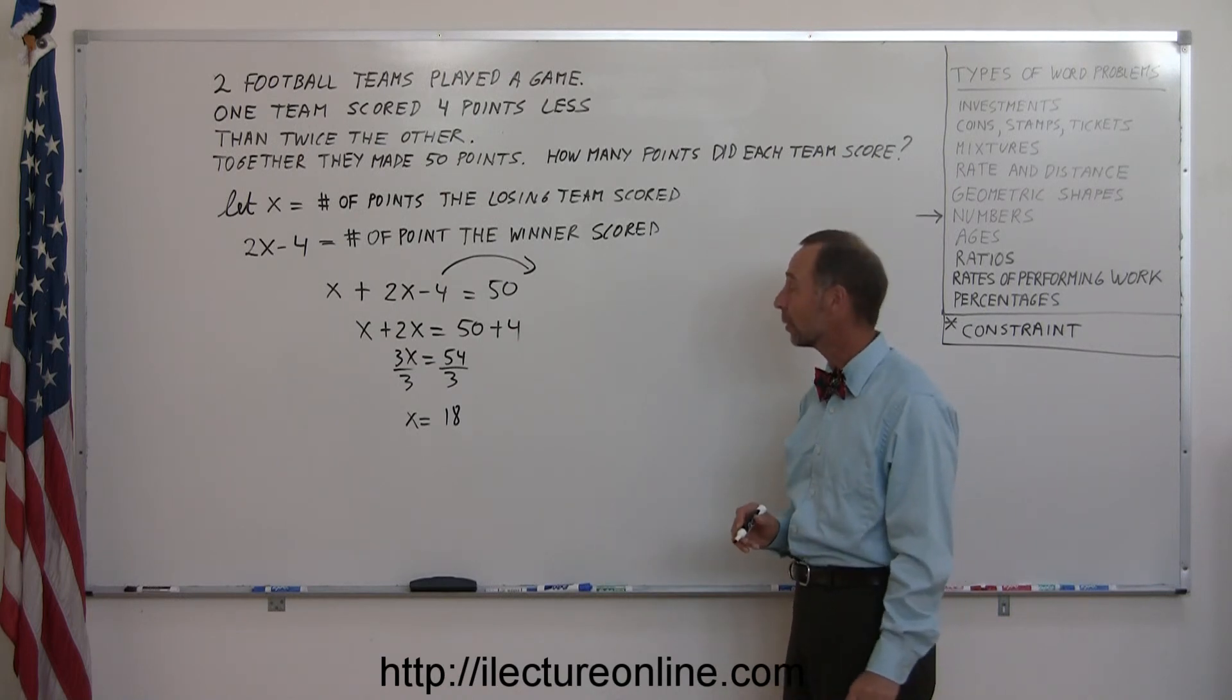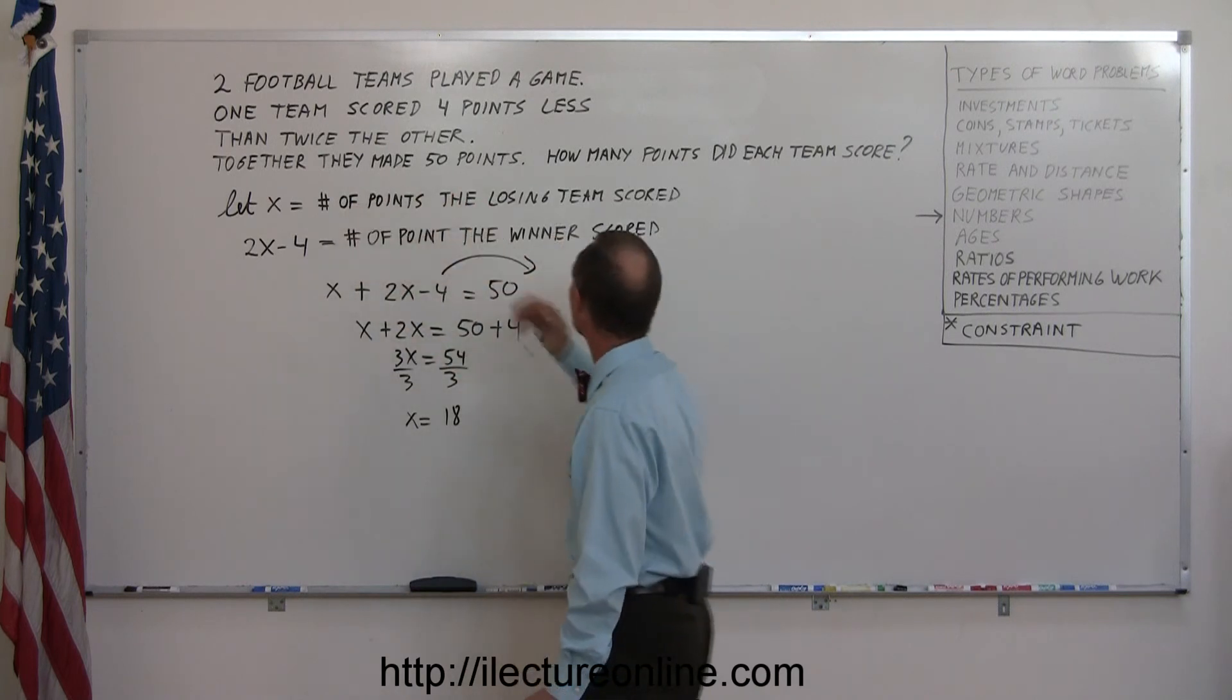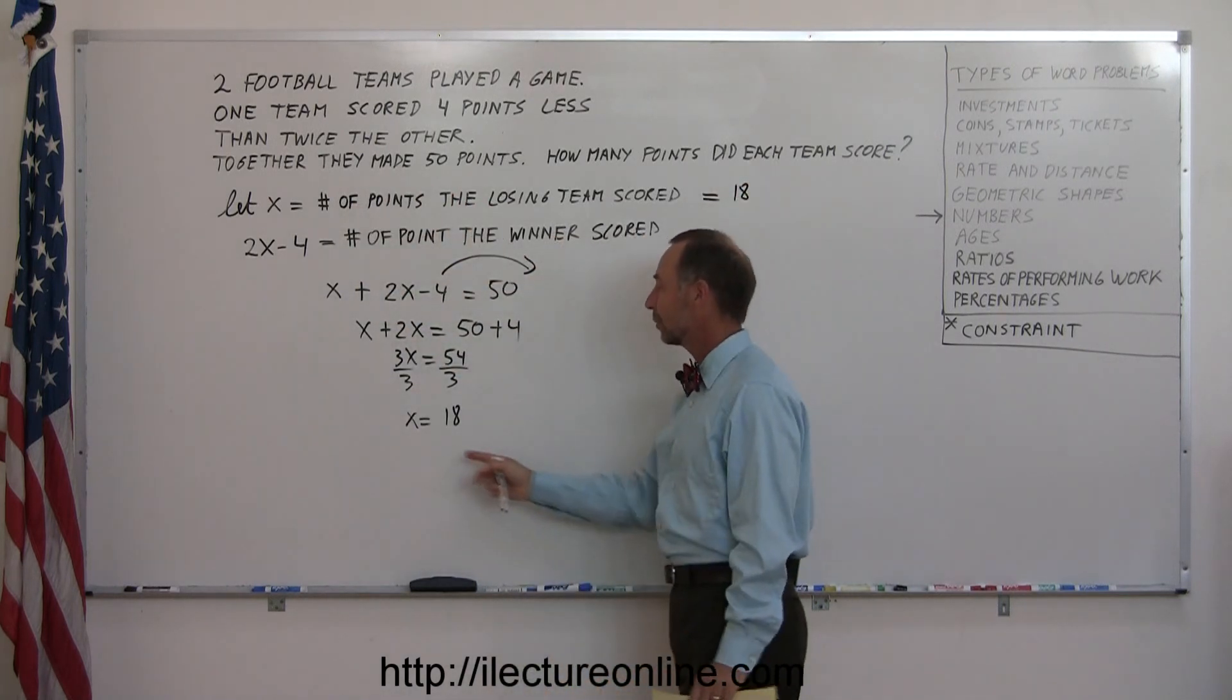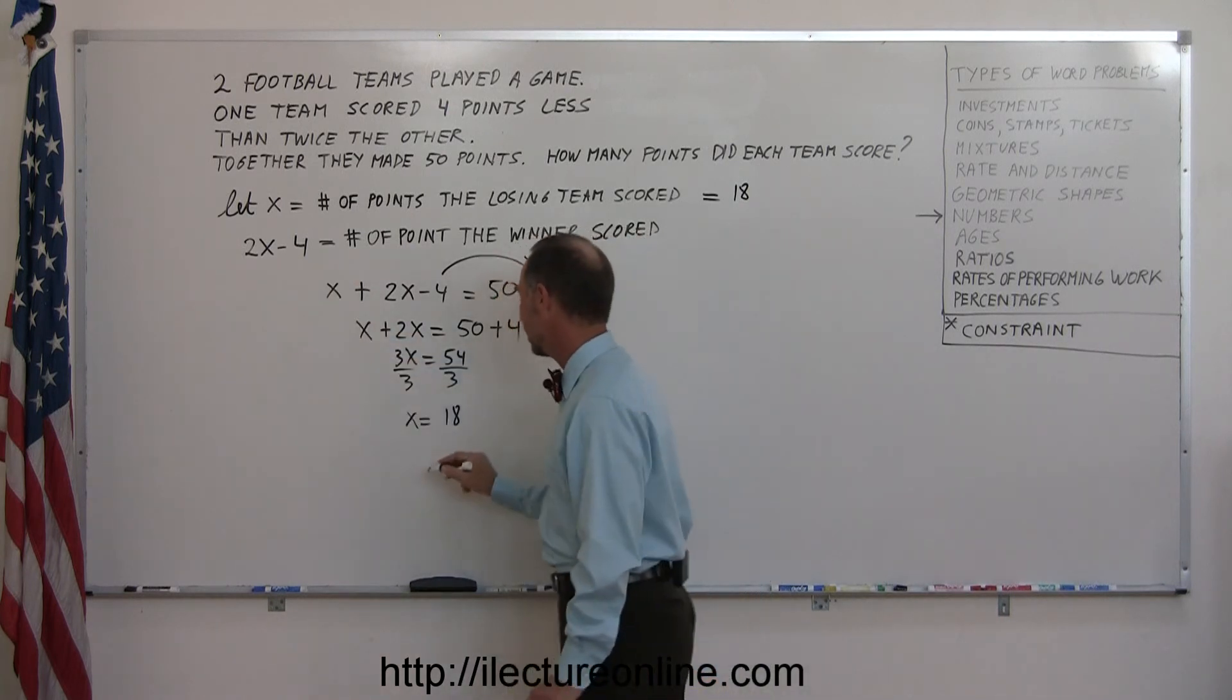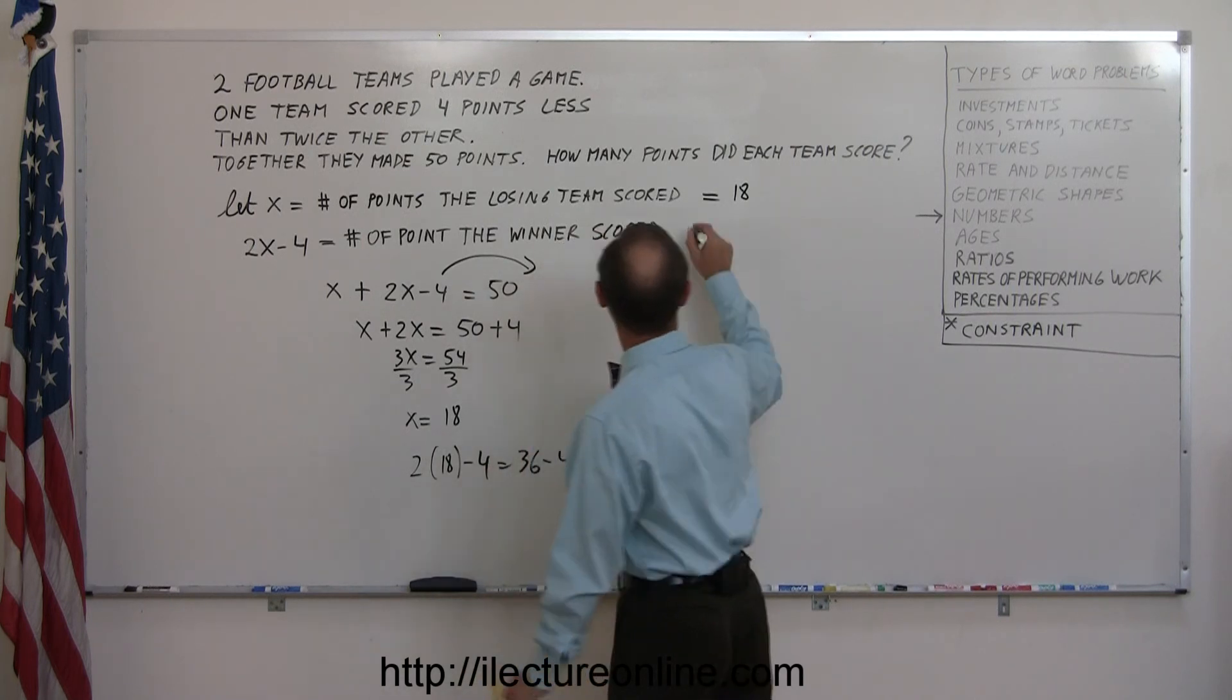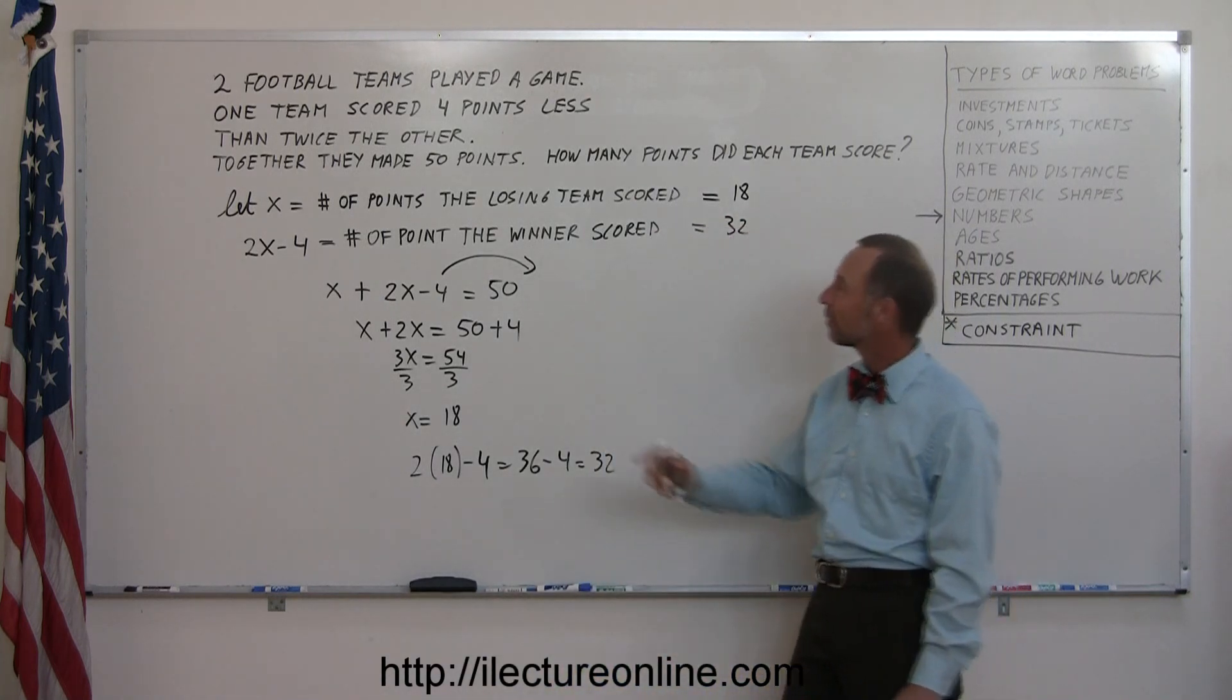Okay, now did we find the right quantities? We assume that 18 is the number of points the losing team scored. And if we double that, 2 times 18, so 2 times 18 minus 4, that would be 36 minus 4, which is 32. That would be the number of points the winning team scored. And if we add them together, sure enough, we get 50. So the answer seems to be correct.